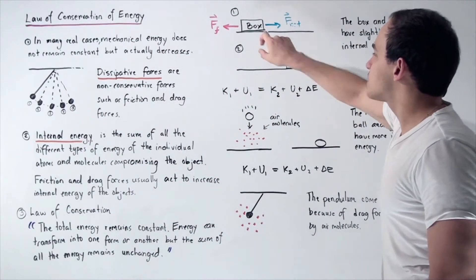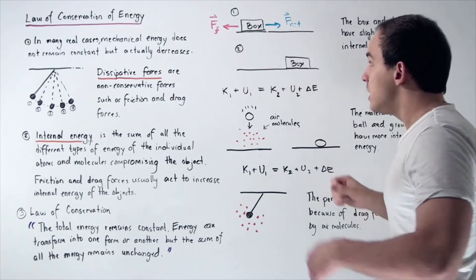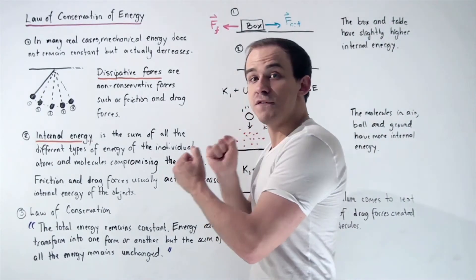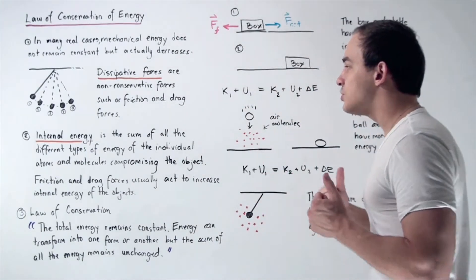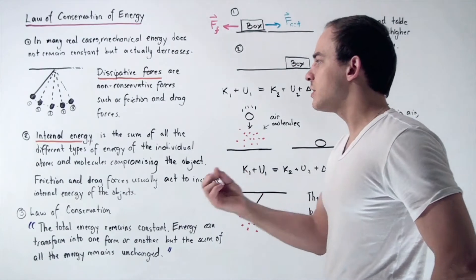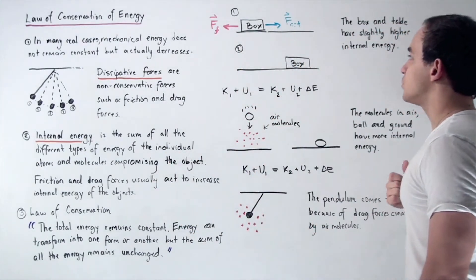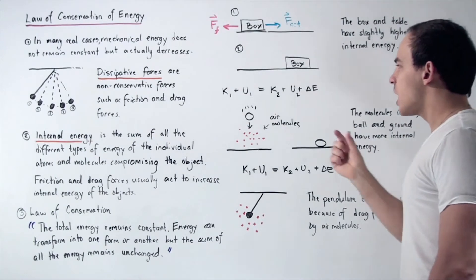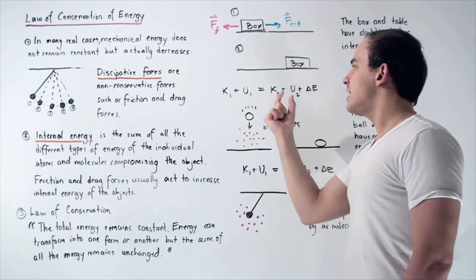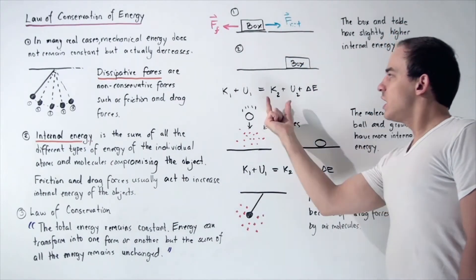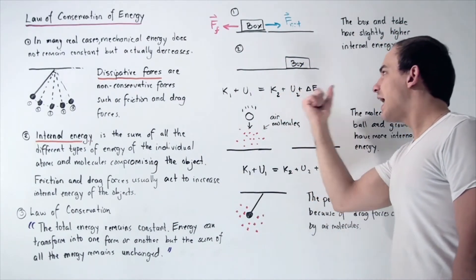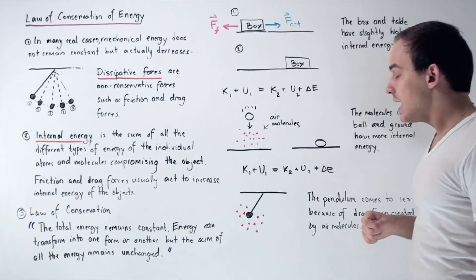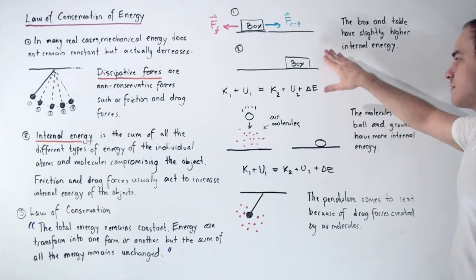If we examine, on a microscopic level, the surface between the box and the table before and after, we find that afterwards the molecules and atoms are vibrating more vigorously. Some of that kinetic energy of the macroscopic object has transformed into internal energy of the microscopic molecules and atoms comprising our two objects. If we calculate, we get the following result: the initial kinetic energy and initial potential energy equals the sum of the final kinetic and potential energy plus the change in internal energy. In fact, all of that energy has gone into increasing the internal energy of the system.